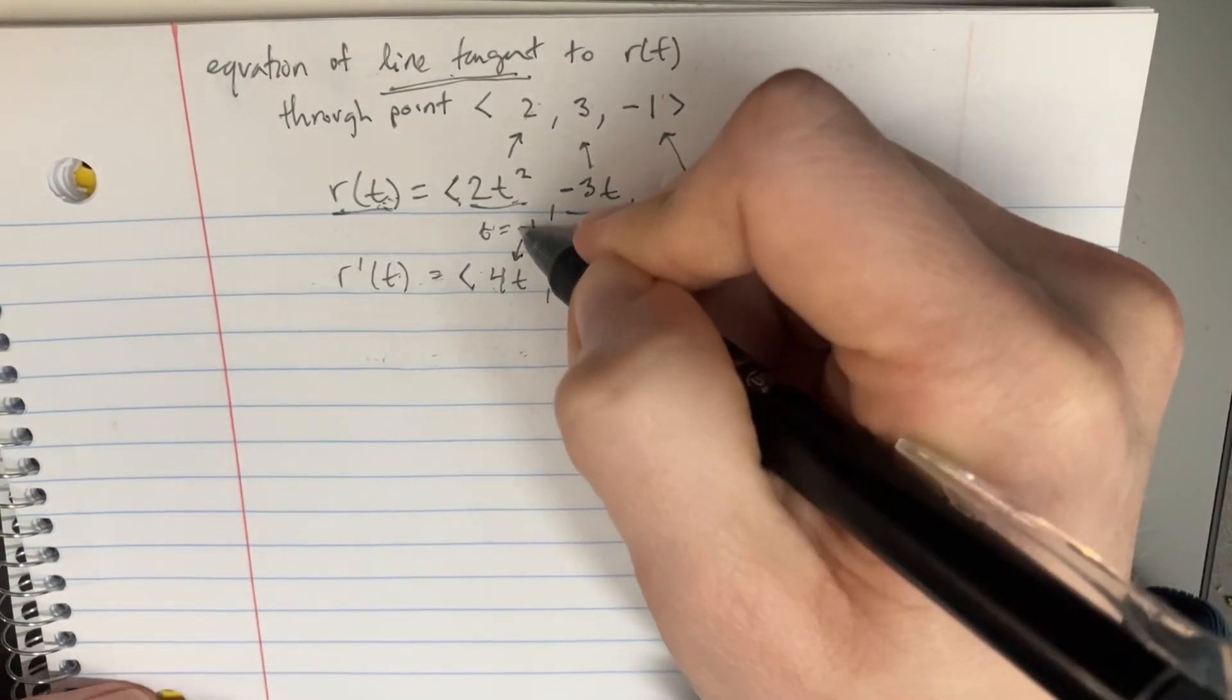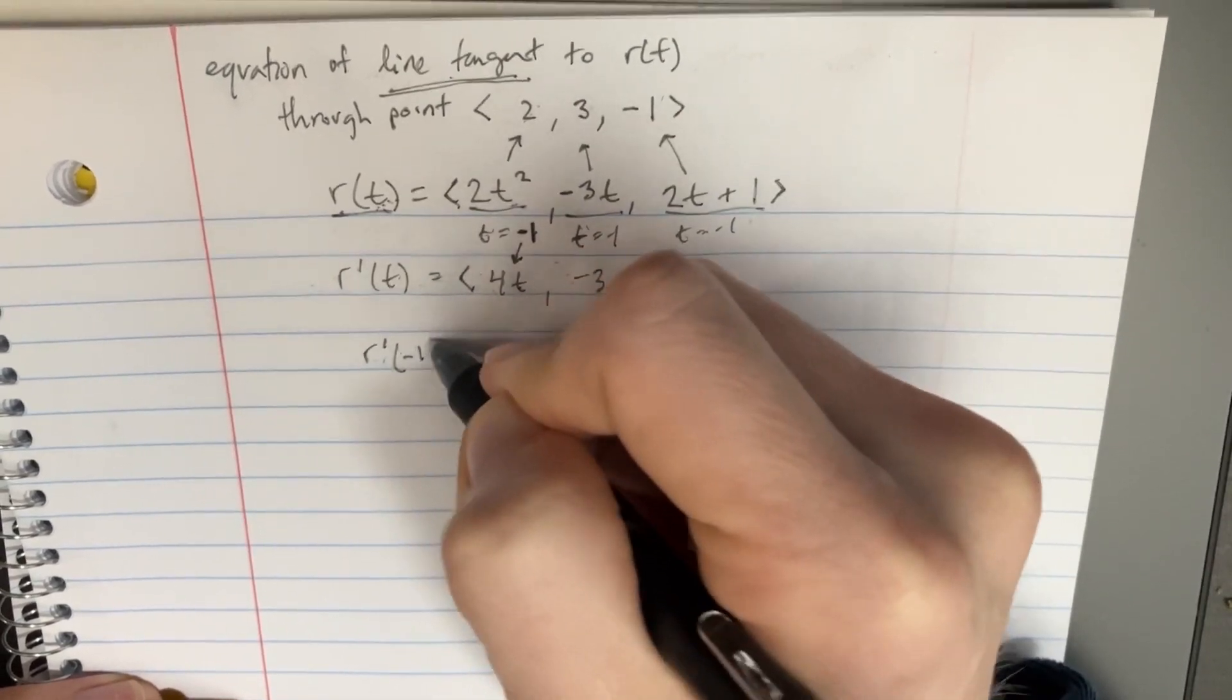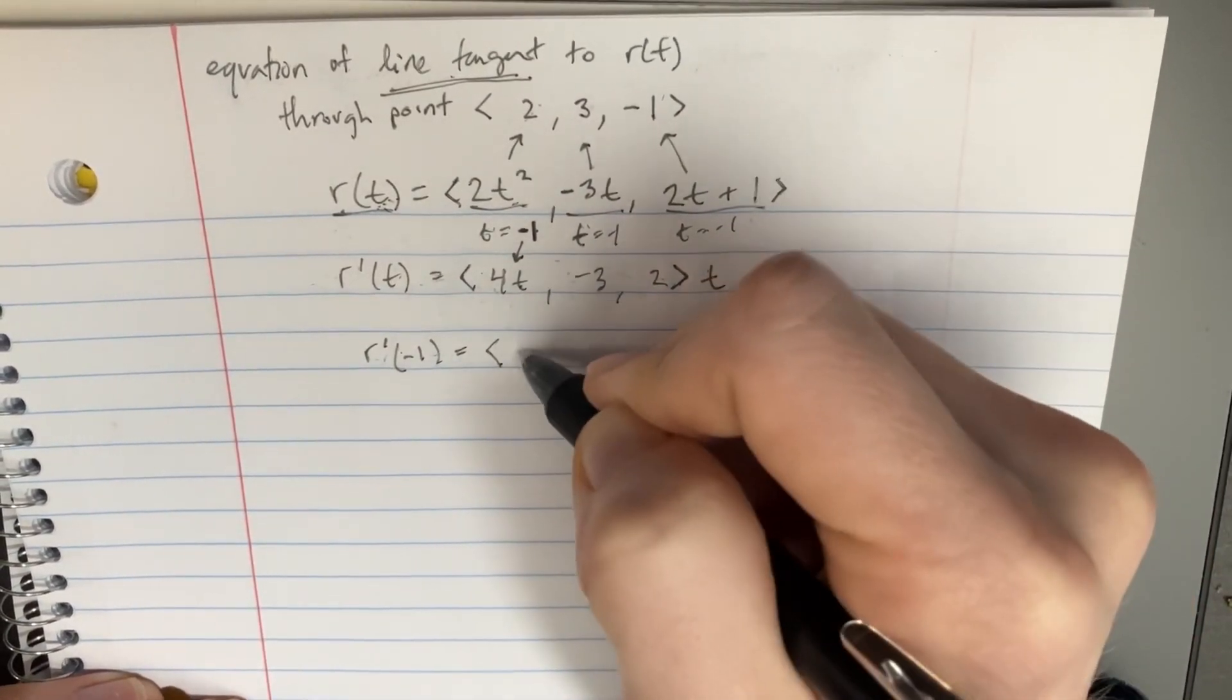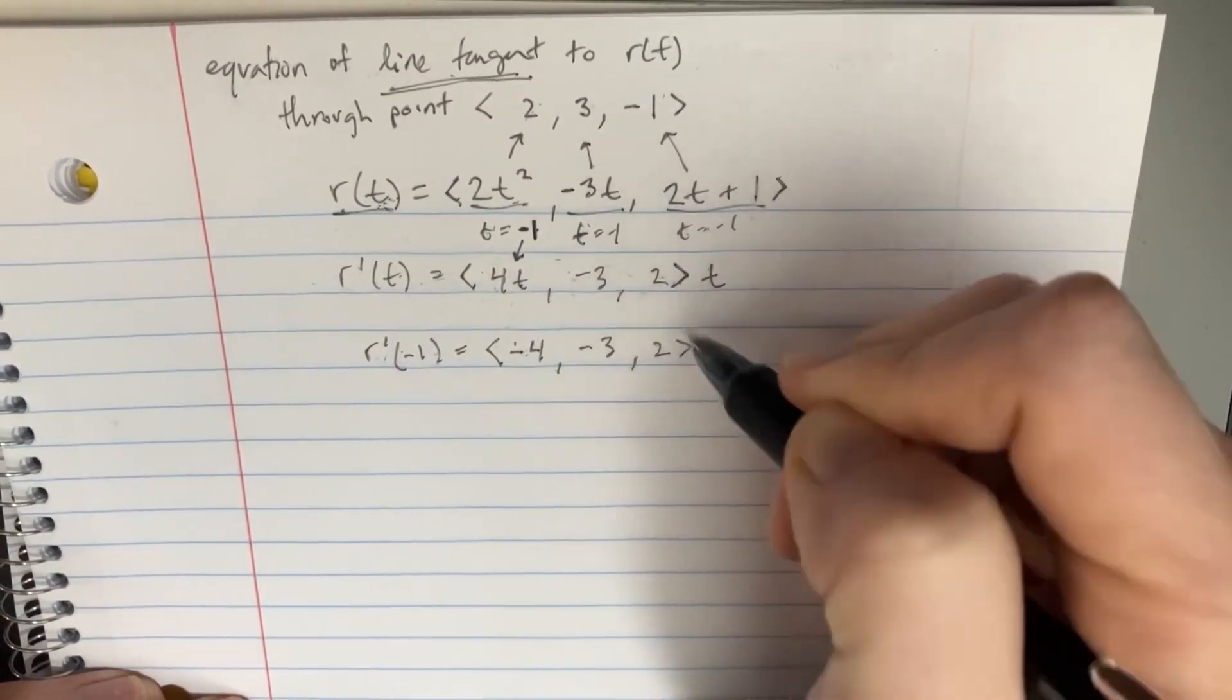So we're going to use that negative 1 that we just found into there. And we're going to say that r sub negative 1 is going to be equal to negative 4 and then negative 3 and then 2 because there's nothing over there.